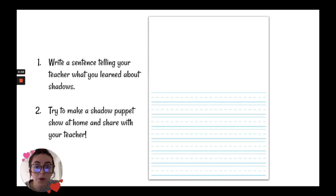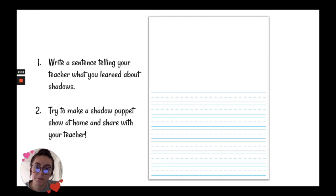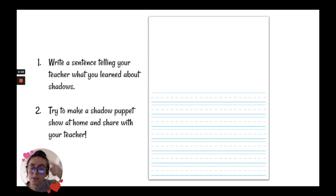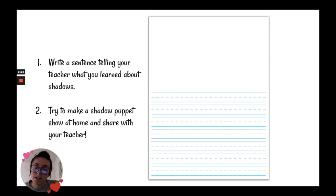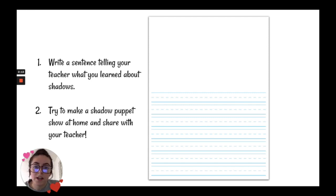Alright, great job, scholars. Now I want you to take out your journal and pencil and write a sentence telling me what you learned about shadows — what is your favorite part? Remember, when you write a sentence, you need a capital letter at the beginning and a period at the end. Make sure you go back and re-read your sentence to make sure you didn't miss any words or ideas. Then, once you're done with your sentence, I want you to try and make your own shadows — maybe use a flashlight at night, or go outside and see your shadow from the sun. Show your teacher on Class Dojo and share your sentence.